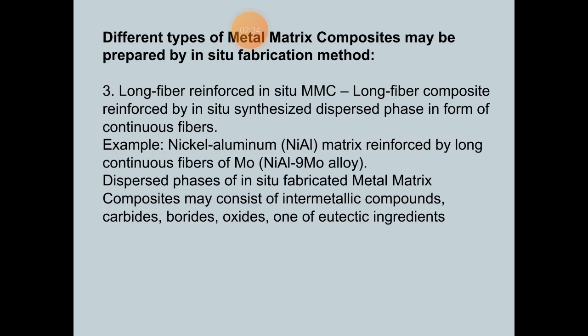The third type is long fiber reinforced in-situ metal matrix composites — composites reinforced by an in-situ synthesized dispersed phase in the form of continuous fibers. An example is a nickel-aluminum matrix reinforced by long continuous fibers of Ni3Al alloys.